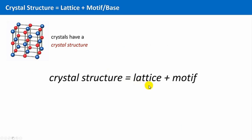A crystal structure is a lattice plus the motive. The motive is sometimes also called the base. We first have to look at what a lattice means, then what a motive is, and in which way it is linked to our crystals.